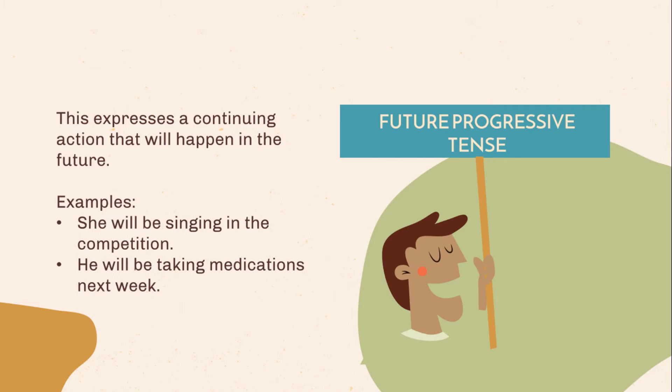Future progressive tense. This expresses a continuing action that will happen in the future. Examples: She will be singing in the competition. He will be taking medications next week.